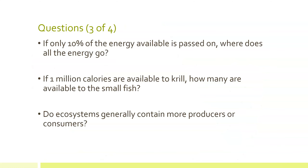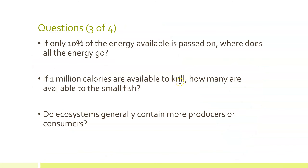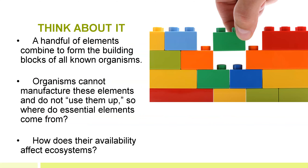Question set three: If only 10% of the energy available is passed on, where does all the energy go — I already told you that. If 1 million calories are available to krill, how many are available to the small fish at the next trophic level? And do ecosystems generally contain more producers or consumers? Generally, not always the case, but generally.